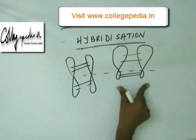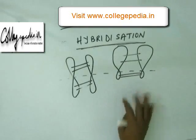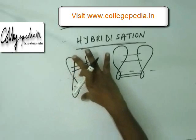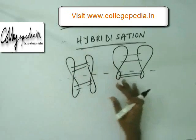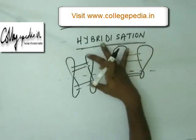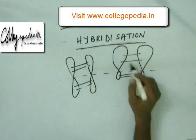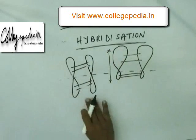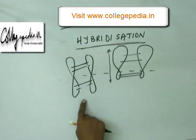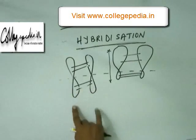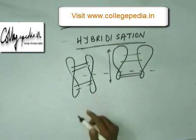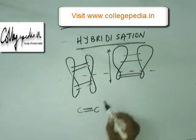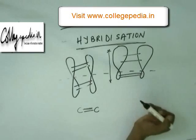We can carry out sideways overlapping either with a pure orbital or with a hybridized orbital. The extent of sideways overlapping will be more if the lateral area is greater. The lateral area available in a hybridized orbital is less than in a pure orbital. So the extent of sideways overlapping is lesser in a hybridized orbital, and thus the pi bond is formed by pure orbital, not by hybridized orbital.